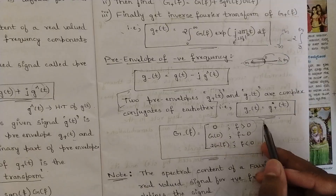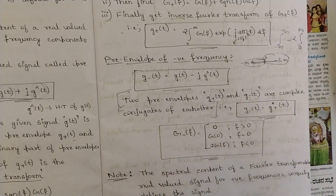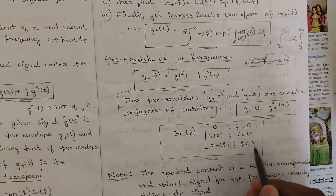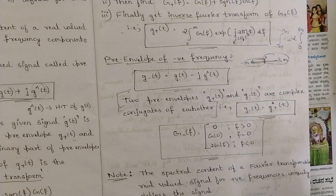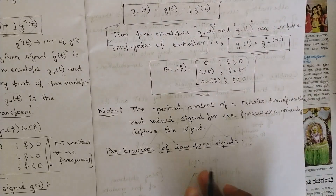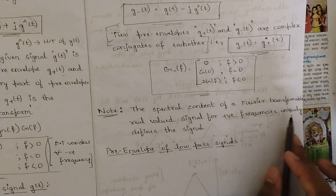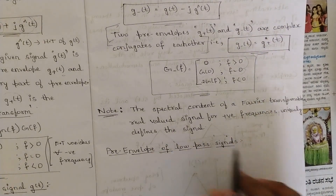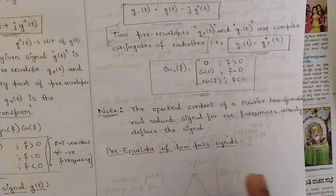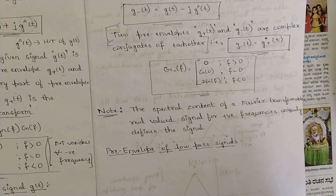G-(f) is the complex conjugate, so when frequencies are greater than zero it is zero — since when we consider negative frequency all the positive frequencies are eliminated. It is G(0) when frequency equals zero, and it is two times G(f) when frequency is less than zero. Note this point: the spectral content of a Fourier-transformable real-valued signal for positive frequencies uniquely defines the signal.